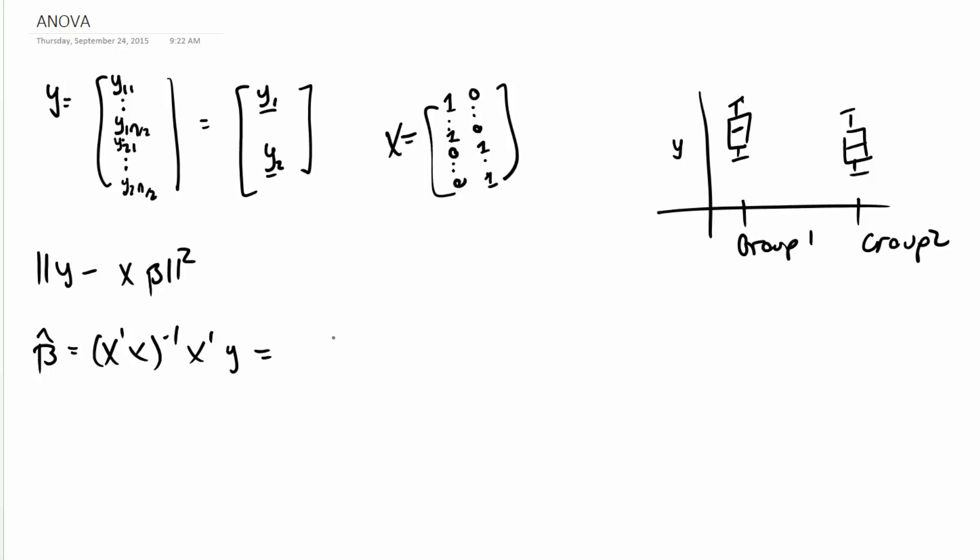But x transpose x, so that's just a vector of 1s and 0s, a vector of 0s and 1s, times 1s and 0s and 0s and 1s. And we want that inverse.